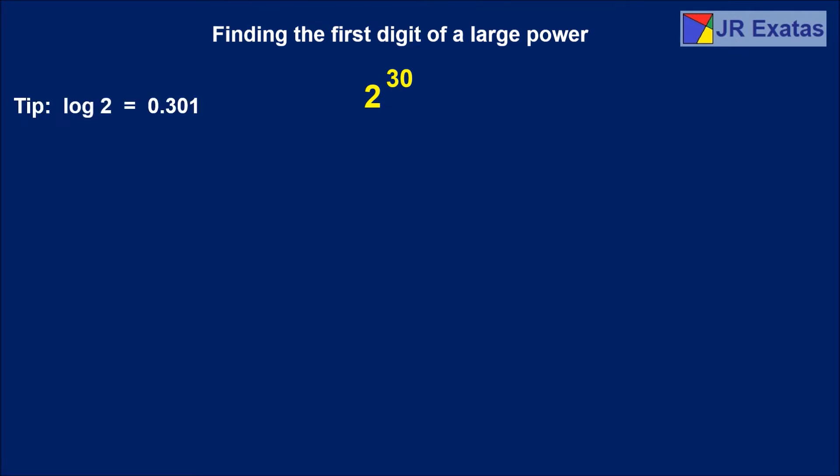Then I will call our number J. Applying logarithm we have log J equals log 2 to the 30 equals 30 times 0.301, so log J equals 9.03.